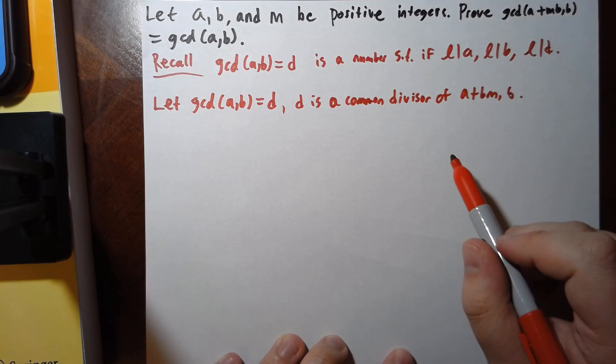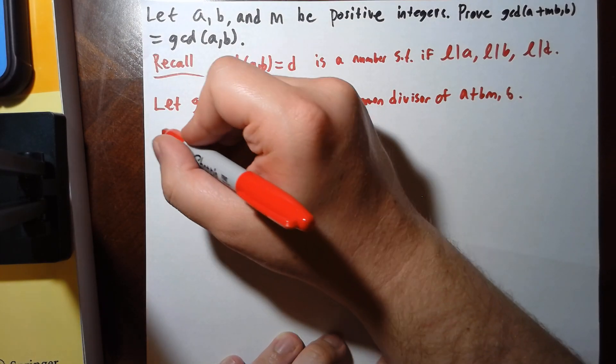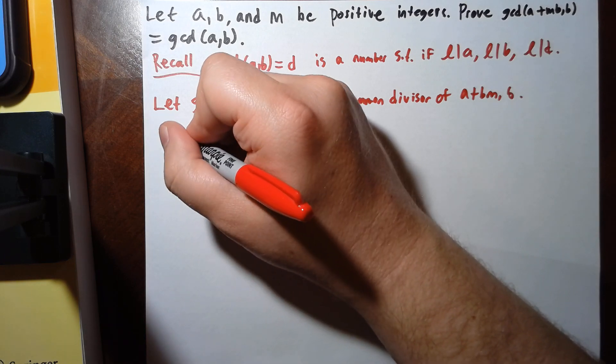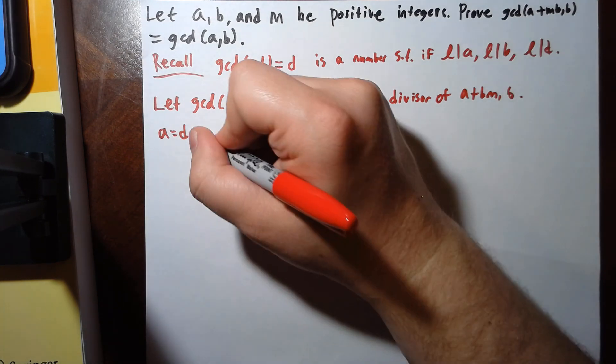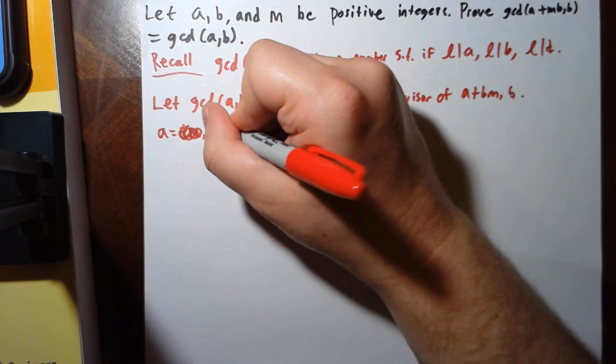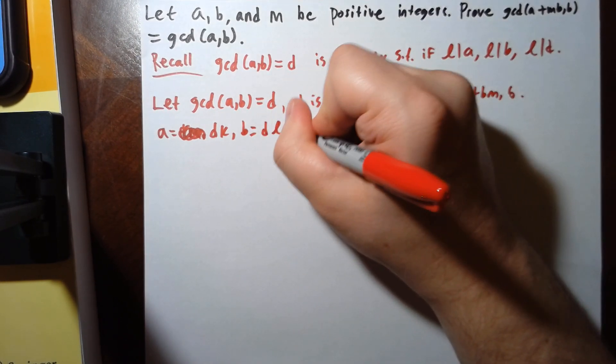This is because since d divides a and d divides b, I can write a equals dk and b equals d times l.